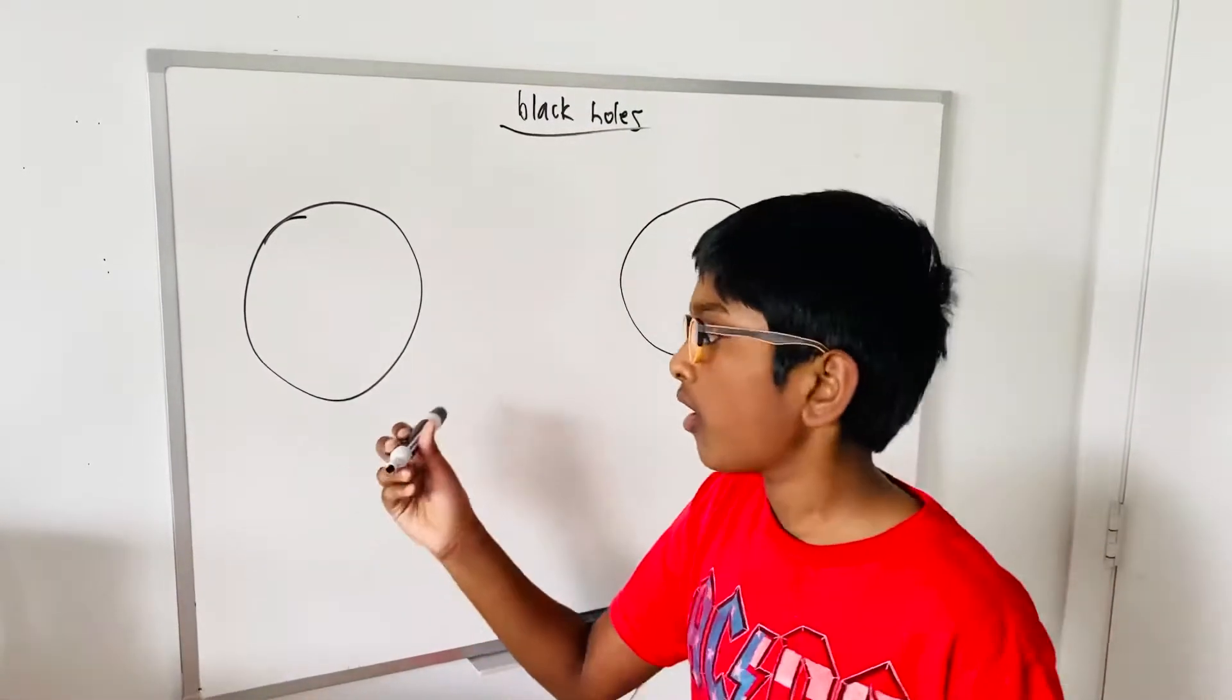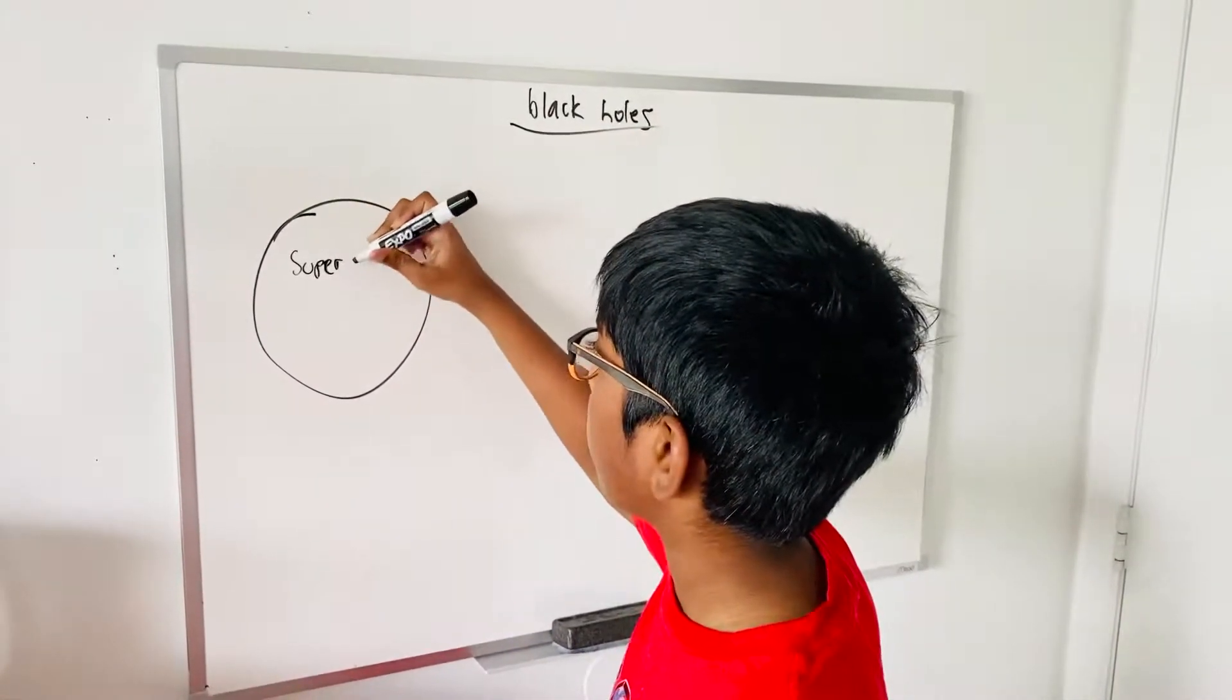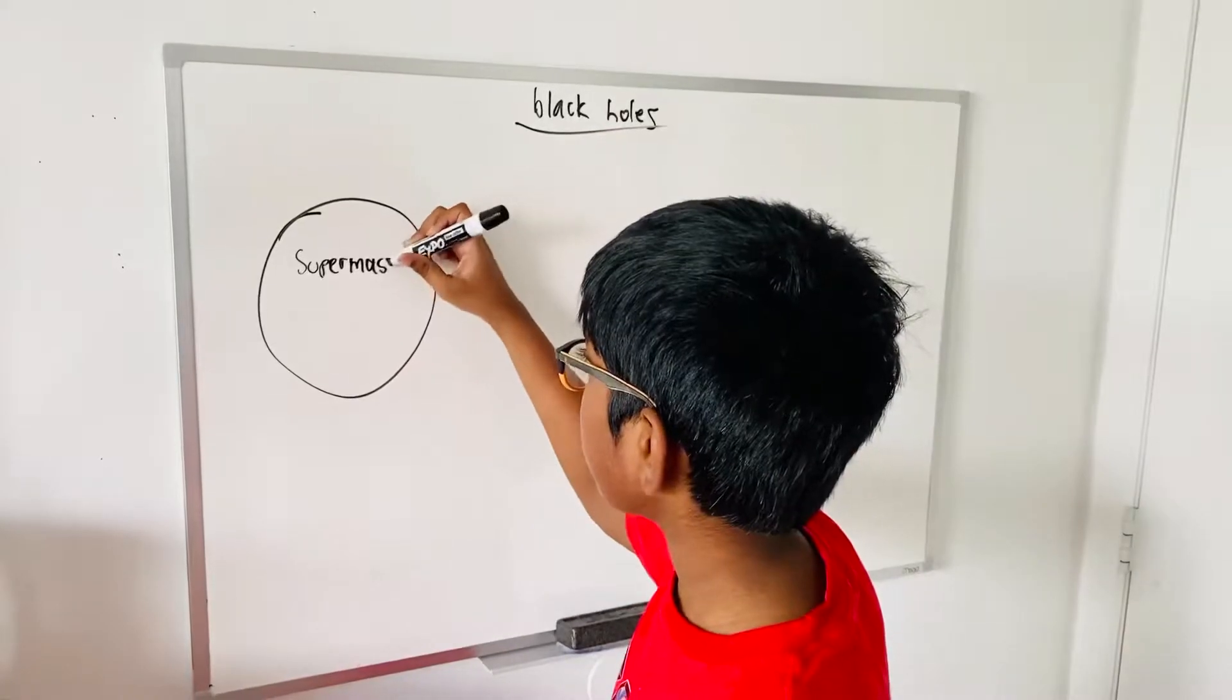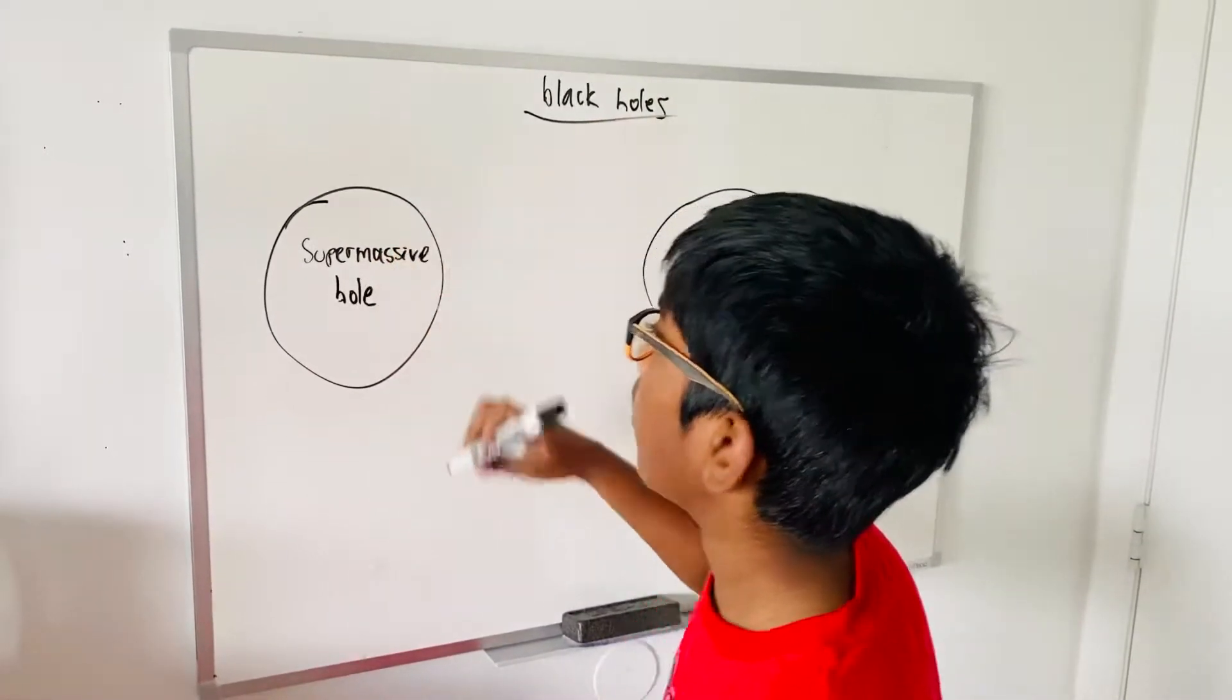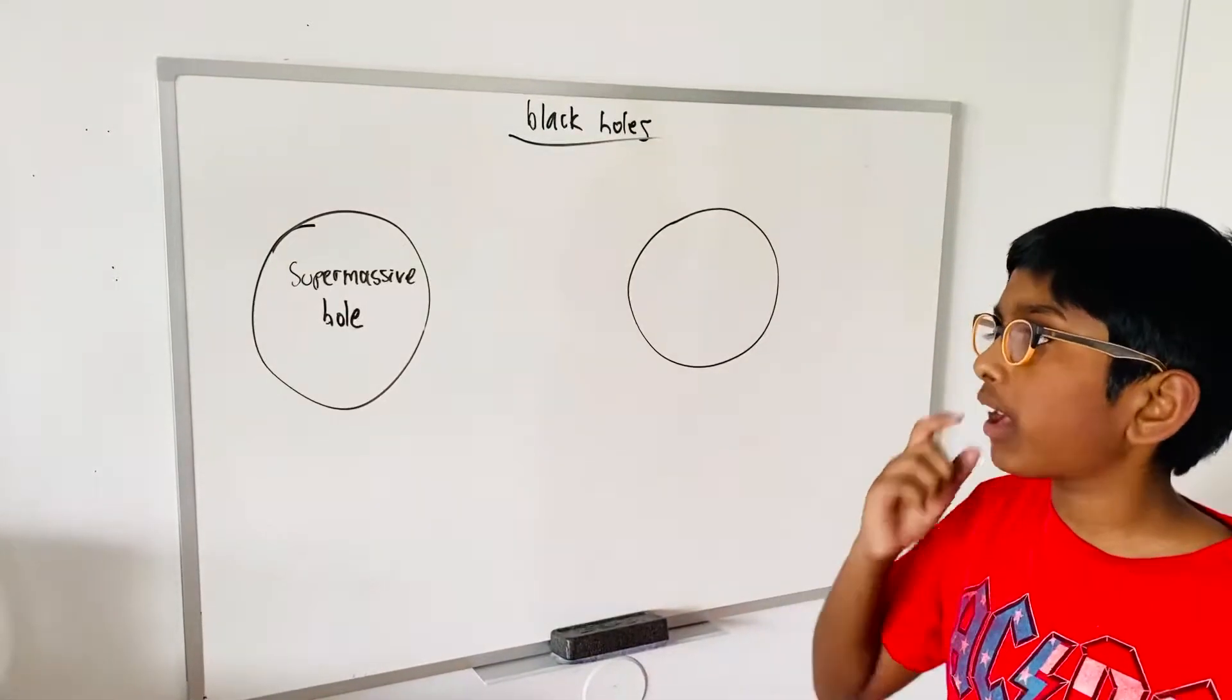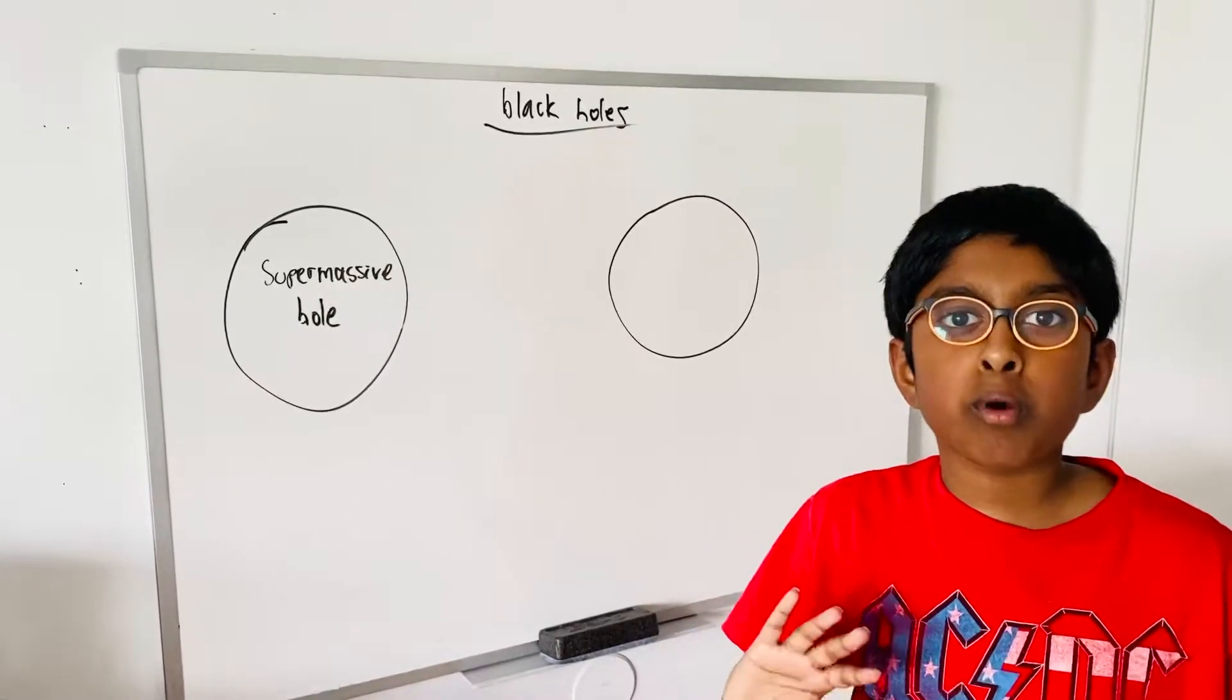So one type of black hole is the supermassive black hole. The supermassive black hole is more than a million times mass than the Sun.